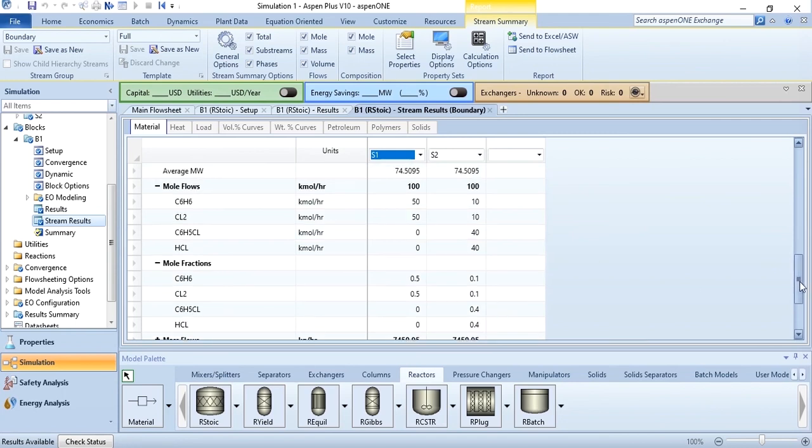Now if you want to confirm that 80% conversion is achieved for benzene or not, how you can do it? Number of moles in which is 50, moles out 10. 50 minus 10 is 40, 40 divided by 50 obviously is 0.8. Multiplied by 100, it is 80%. So 80% conversion is achieved in this process.